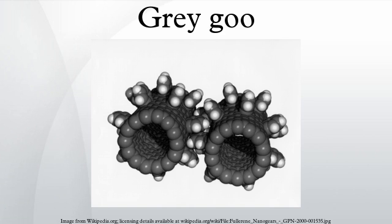Grey goo is a hypothetical end-of-the-world scenario involving molecular nanotechnology in which out-of-control self-replicating robots consume all matter on Earth while building more of themselves, a scenario that has been called ecophagy.